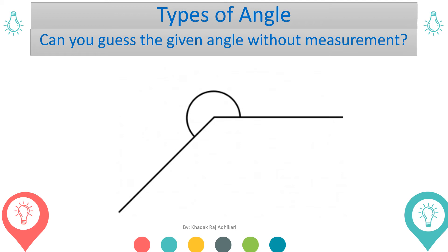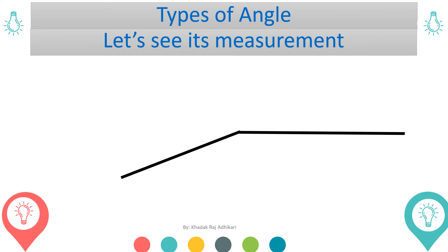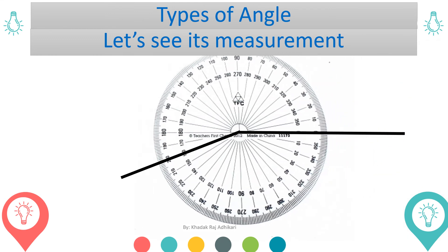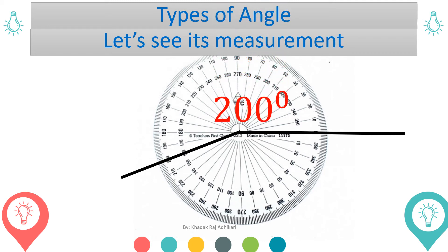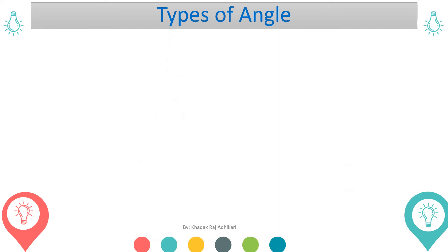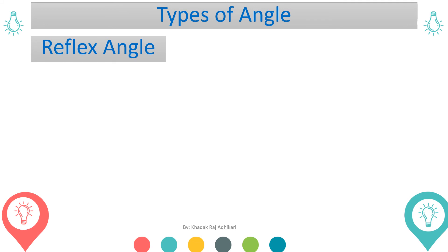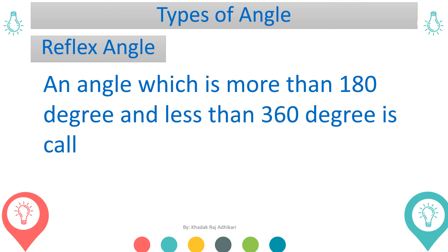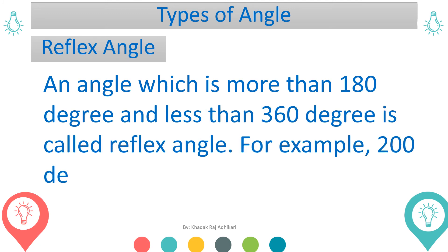Likewise, can you guess the measurement of this angle? Let's see its measurement. We are measuring this angle using a 360-degree protractor. That is 200 degrees. An angle which is more than 180 degrees and less than 360 degrees is called a reflex angle.